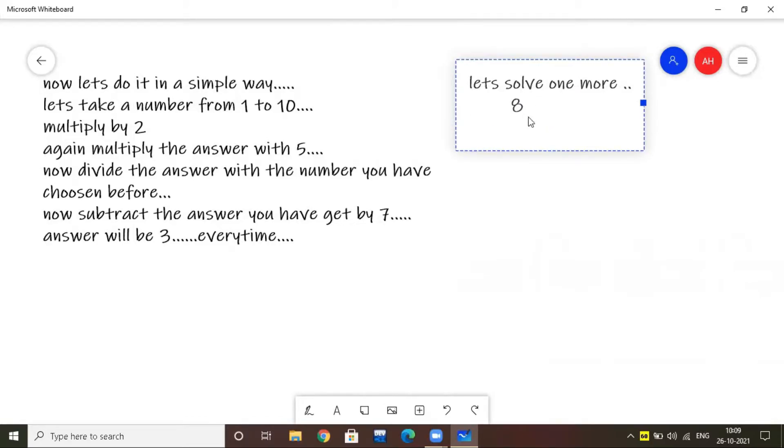Just remember that the end answer will be 3. Okay, let's solve another question. Let's take example as 8. 8 into 2 is 16. Now again, 16 into 5 is 80. 80 divided by 8 is 10. Now 10 minus 7 is 3. Always you will get the answer as 3.